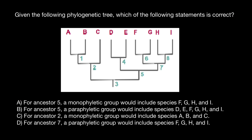Here are the variants to choose from. Variant A: for ancestor five, a monophyletic group would include species F, G, H, and I. So where is ancestor five? It is here. Let me circle it so you have a better vision of this group.